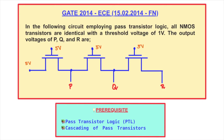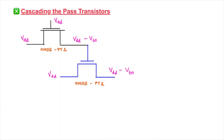We know the symbol of N-MOS wherein we have the gate, source, and drain. At each of the drain outputs we are going to take the outputs P, Q, and R. The N-MOS pass transistor can pass strong zero and weak one. Since N-MOS pass transistors cannot pass strong ones, they cannot be cascaded by connecting the output of one transistor as an input to the other.